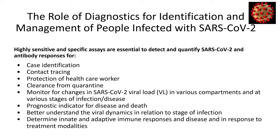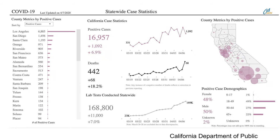Diagnostics should also be usable as prognostic indicators for disease and for death, as we have shown for HIV. Various diagnostic assays, especially PCR, are used to study viral dynamics in relation to stage of infection, as well as to better understand the innate and adaptive immune responses in relation to viral load, disease, and most importantly, treatment modalities. This slide shows the sharp increase in testing with the availability of commercially available assays, with a large number tested just in the last few days.